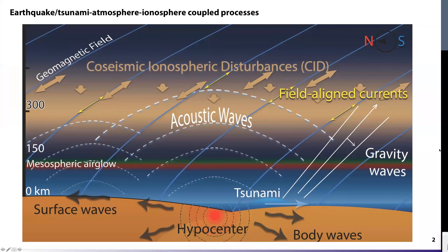First of all, I would like to shortly introduce these coupled geophysical processes. It is known that earthquakes serve as a source of permanent crust deformation at the focal areas of earthquakes, and also as a source of transient surface displacements driven by seismic wave propagation. In the case of undersea earthquakes, these displacements may serve as the source of large waves in the ocean, usually called tsunamis. Conservation of energy and momentum at solid-air and water-air interfaces leads to the generation of acoustic and gravity waves in the atmosphere.